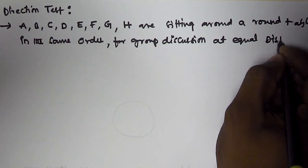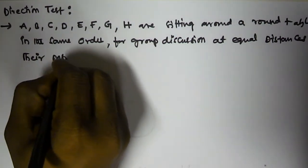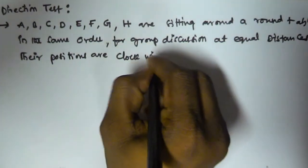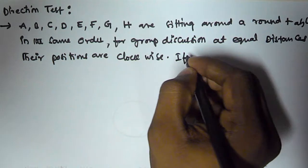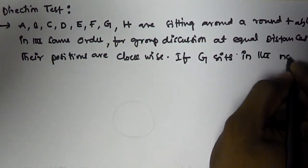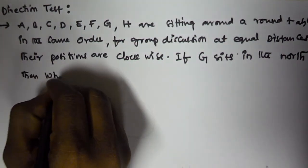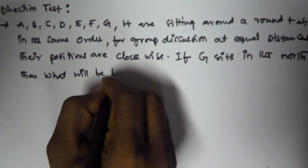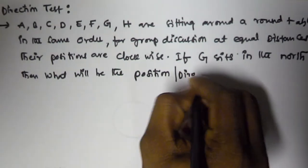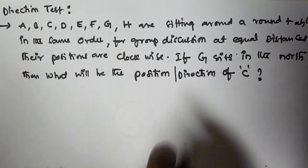Their positions are clockwise. If G sits in the north, then what will be the position or direction of C?